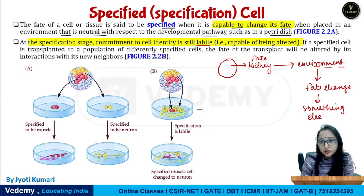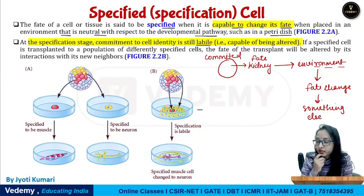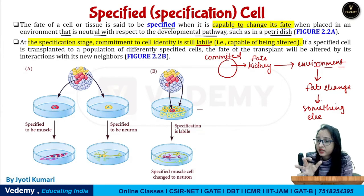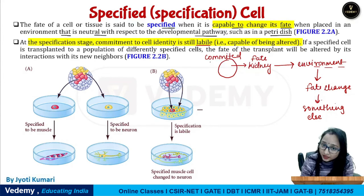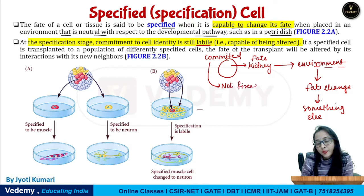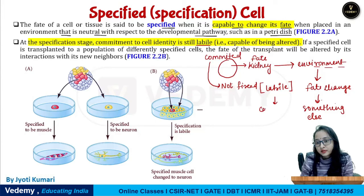Why is it labile? We said this cell was committed — its fate was to become a kidney. But we placed it in a different environment and its fate changed. Now it is not a kidney. The word we use for this is 'labile' — which means having the capability to change.